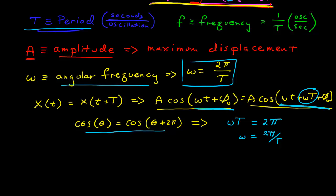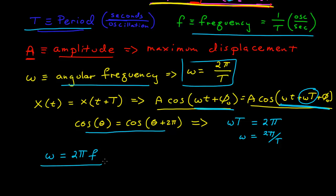Because of how frequency is defined, the angular frequency omega equals two pi times the frequency f. Two pi is the number of radians in a single oscillation, so angular frequency is in radians per second. Radians is not a formal unit, just a way to define angles. Angular frequency and frequency have the same units — one over seconds — but they differ by a factor of two pi, which converts between radians and oscillations.